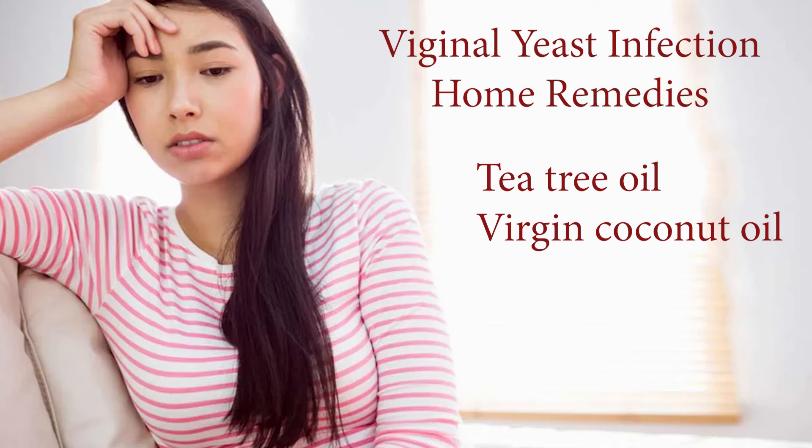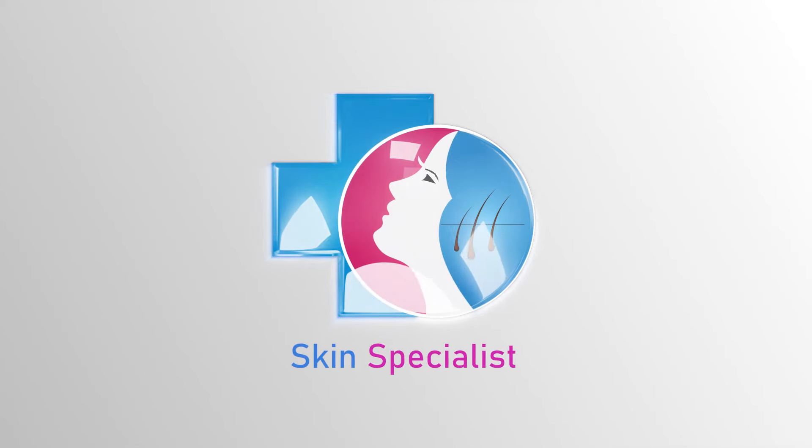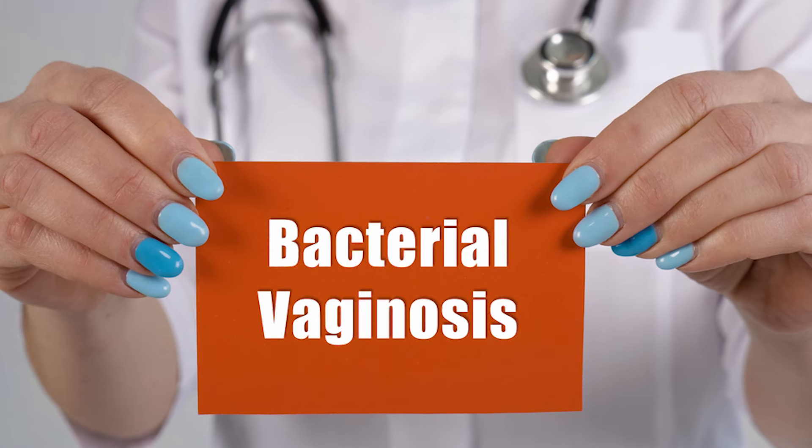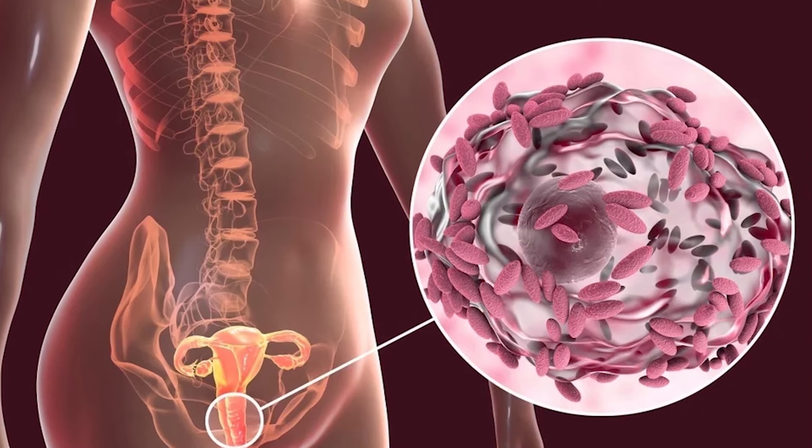We can use tea tree oil or virgin coconut oil to get rid of the irritation. How can we get rid of the bacteria? We are going to talk about the bacteria — this is bacterial vaginosis, or a BV infection. It's very important to represent this to patients. This can be used as a vaginal swab.